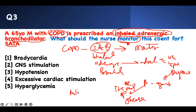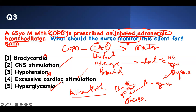That is albuterol. If I give you albuterol, what is the side effect? You're going to be tachycardic. It will stimulate your central nervous system — you'll have tremor, agitation, sweating. Blood pressure goes up. You get excessive cardiac stimulation and your glucose goes up. So what should the nurse monitor? Central nervous system stimulation, excessive cardiac stimulation, and hyperglycemia.